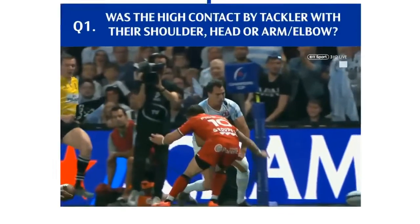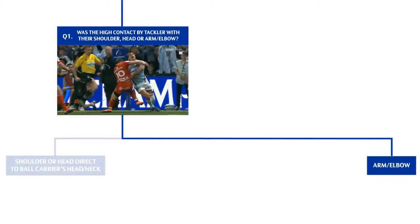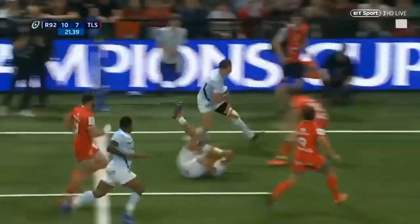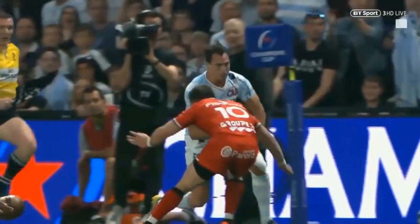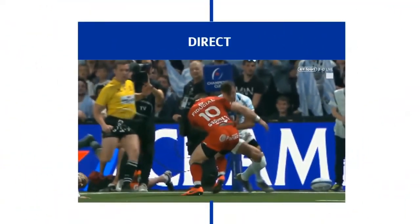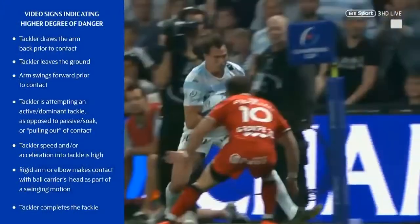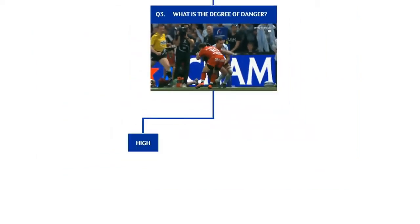First, match officials must ask which part of the tackler makes the high contact - here, the tackler's upper arm strikes the neck of the ball carrier. The second question is whether neck contact is direct or indirect. In this case, the upper arm to neck contact is direct, even though the tackler's right arm makes contact with the ball carrier's body lower down. Third, they ask whether the degree of danger is high or low. Because the tackler is accelerating into the tackle, attempting a dominant tackle, and completes the tackle, the degree of danger is high - resulting in an initial decision of a red card.